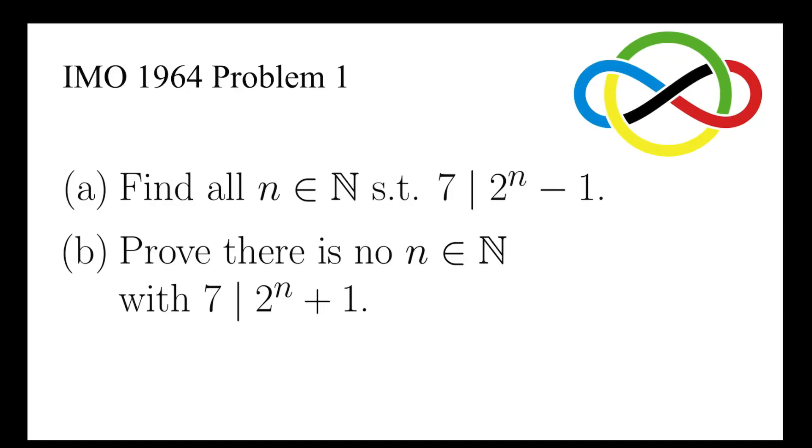Let's take a look at the first problem in the IMO 1964: to find all natural numbers n such that 2^n - 1 is a multiple of 7, and to prove that there is no natural number n with 2^n + 1 being a multiple of 7.